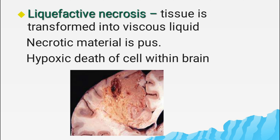Liquefactive necrosis involves digestion of dead cells, resulting in transformation of tissue into a viscous liquid. The necrotic material in liquefactive necrosis is called pus, which is creamy yellow. The hypoxic death of cells within the CNS — that is, the brain — is also included in this type of necrosis.